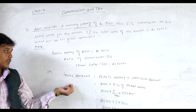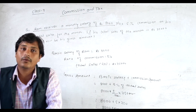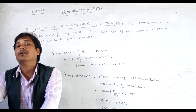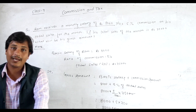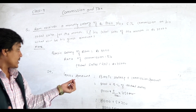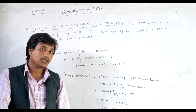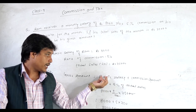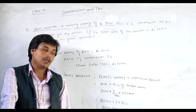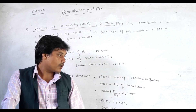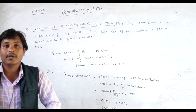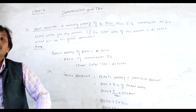Gross amount is the amount which Ram receives at the end of the month — that means the total amount including commission amount plus his basic salary. So gross amount = basic salary plus the commission amount. His basic salary is Rs 8000. What is the commission amount? Commission amount is the commission percentage of the total sales.